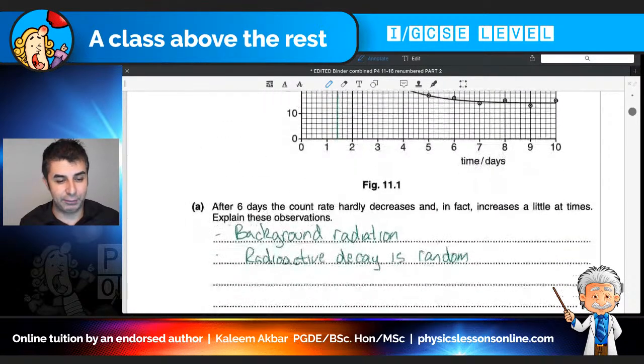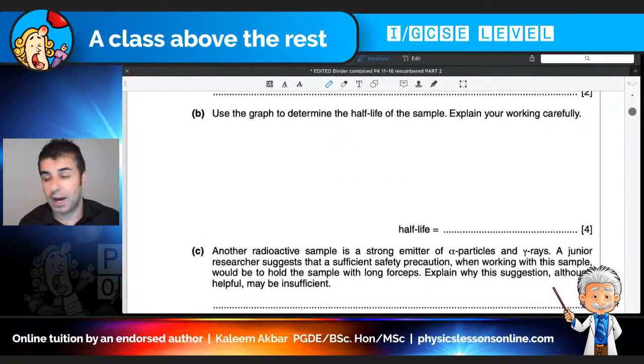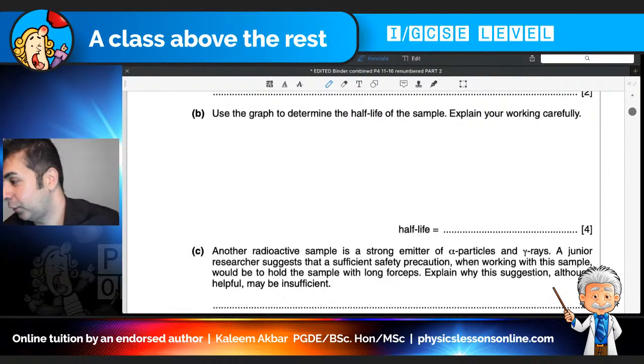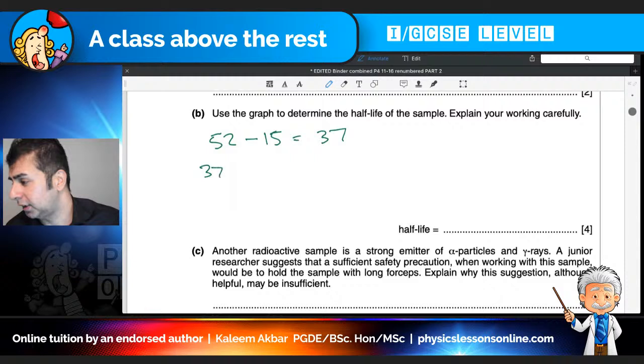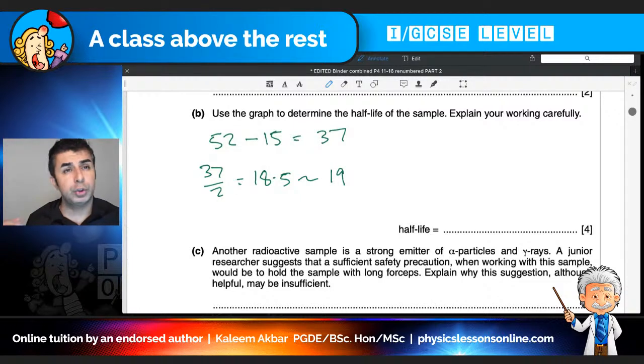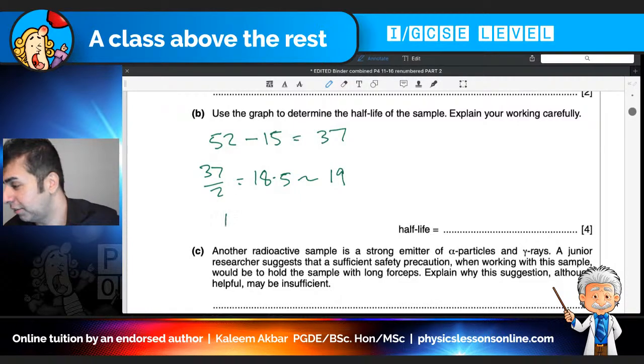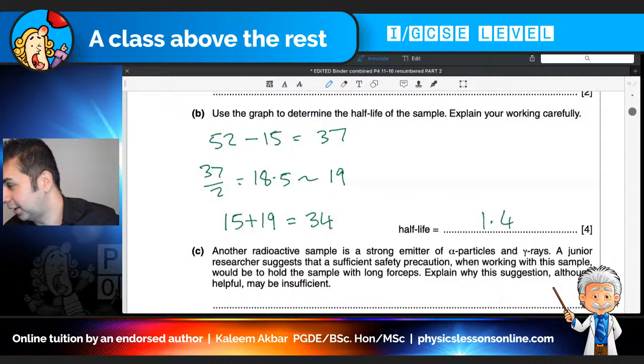I will recap this right now. So remember, we start, the graph tells us the beginning count rate is 52. But remember, I've chosen 15 of that as background. So it gives me 37. So I want to find the half-life of the sample. So 37 divided by 2 is 18.5. For simplicity, we're going to round that to 19. So remember, I've got to add the 15 back on to the 19, which gives me 34. And then how many days was that? It was 1.4 days.